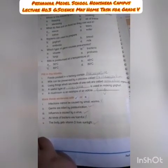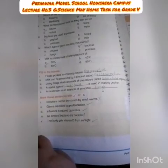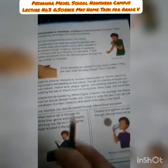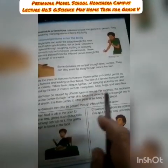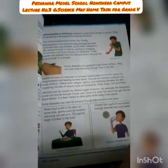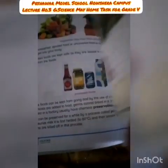Question three: Mark these sentences with tick or cross. First sentence: Infections cannot be caused by small worms — this is cross (false), because worms can also cause infections in our body. On page fifteen it states infection can be caused by different types of worms; for example, hookworm larvae can burrow through the skin. Second sentence: Germs are killed by pasteurization — this is true, as pasteurization is a process in which milk is preserved and germs are killed.